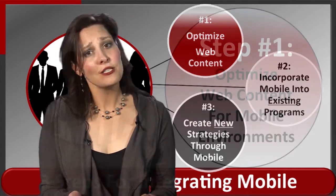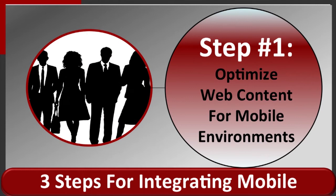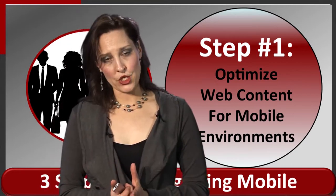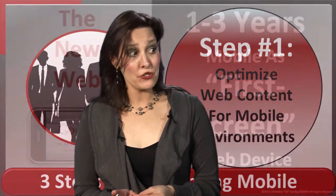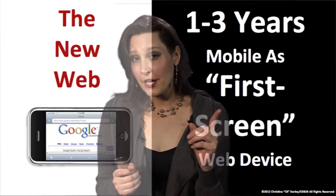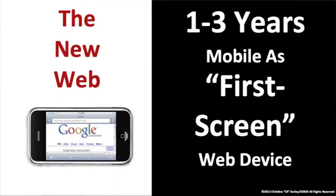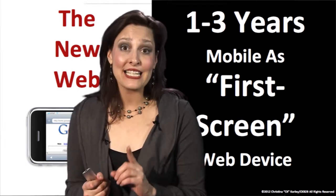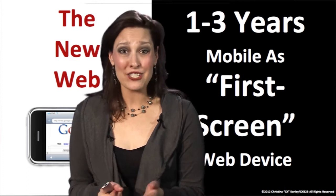Let's start with step number one: optimizing web content for unique mobile environments. Marketers, understand this is very tactical in nature but it is a must-have. In as little as one year, maybe as far away as three years, mobile devices — from small smartphones up to larger tablets — will be the number one way your audiences access your web content. In fact, in Asia Pacific they already are using mobile as the first screen internet device.